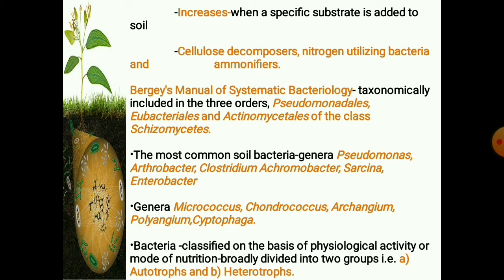As per the system proposed in Bergey's Manual of Systematic Bacteriology, most of the bacteria predominantly encountered in the soil are taxonomically included in three orders — Pseudomonadales, Eubacteriales, and Actinomycetales — of class Schizomycetes. The most common soil bacteria belong to the genera Pseudomonas, Arthrobacter, Clostridium, Achromobacter, Sarcina, and Enterobacter. Another group of bacteria common in the soil is the myxobacteria, belonging to the genera Micrococcus, Chondrococcus, Archangium, Polyangium, and Cytophaga.